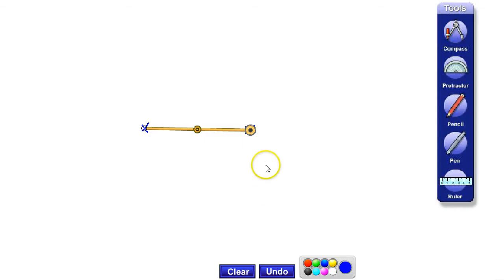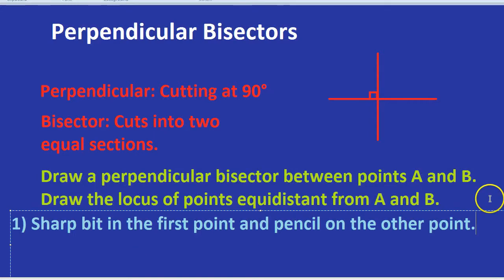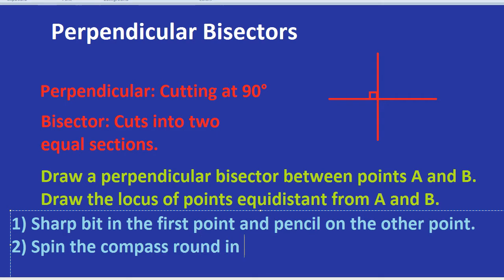Step two is more fun. Step two, what we do is we spin the compass round in more or less a circle. It doesn't have to be a whole circle, just more or less. Spin the compass. And make sure it's drawing, obviously. There's no point in spinning it when it's not drawing, which I do see quite a lot. Spin the compass round in a circle. If you don't have space, it doesn't have to be a whole circle. It just has to be at least a semicircle.